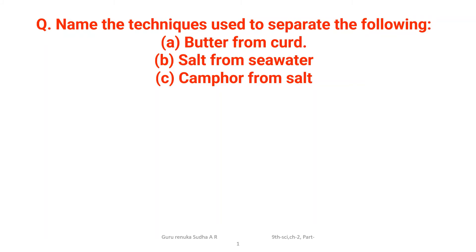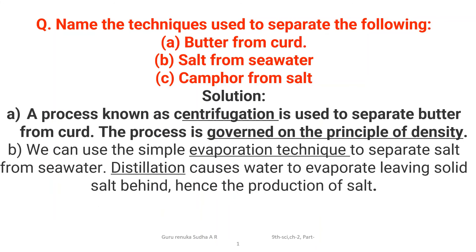The next question asks to name the techniques used to separate: butter from curd, salt from sea water, and camphor from salt. These are things we observe in daily life. Butter from curd is separated by centrifugation. Centrifugation is governed on the principle of density. Depending on density, using the centrifugation process, we separate butter from curd.